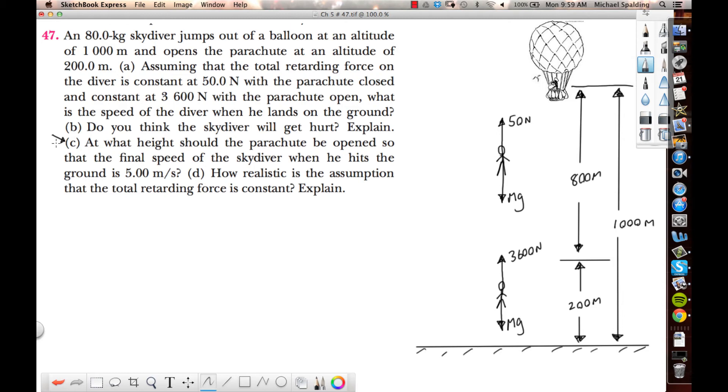Part C, at what height should the parachute be opened so that his final speed is five meter per second? So now things change up here. For starters, what you got to do is, what are we going to do to this 200 right here? This 200 is going to become X. That's our variable, that's what we're looking for. And then this 800 is going to become what? A thousand minus X. Now let's set up our equations.